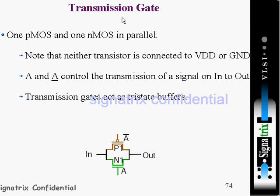Now coming to the transmission gate. A transmission gate is simply a combination of PMOS and NMOS connected in parallel. Note that neither transistor is connected to VDD or ground. This is a two parallel structure of PMOS and NMOS, and whatever is present at the input, you will get at the output.